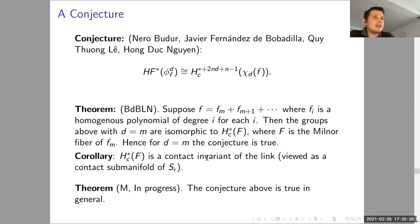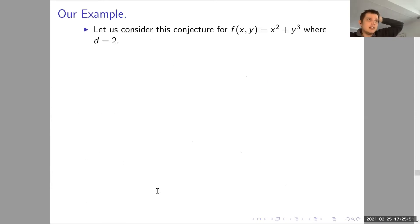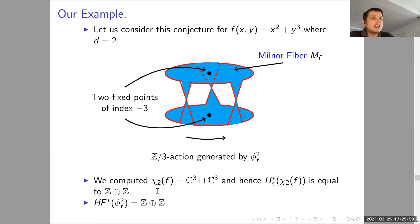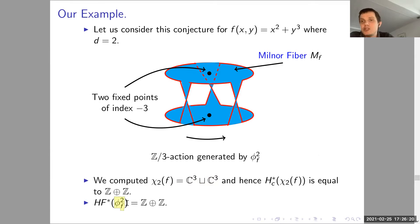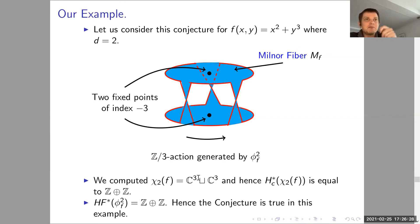In the x²+y³ example, the second contact locus χ₂ is ℂ³ ⊔ ℂ³, whose compactly supported cohomology is ℤ ⊕ ℤ in degree six. The Floer cohomology of φ_f² is also ℤ ⊕ ℤ in the same degree (up to the shift in the conjecture), so the conjecture holds in this example.